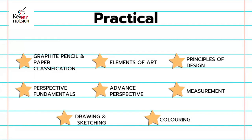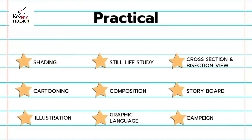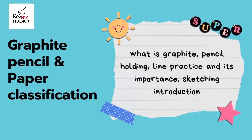Now talking about the practical syllabus: graphite pencil and paper classification, elements of art, principles of design, perspective fundamentals, advanced perspective, measurement, drawing and sketching, coloring and shading, still life study, cross section and bisection view, cartooning, composition, storyboard, illustration, graphic language, and campaign design. Under graphite pencil and paper classification — what is a graphite pencil, holding, line practice and its importance, and sketching introduction.